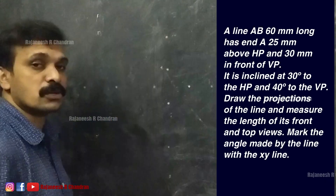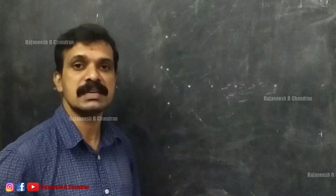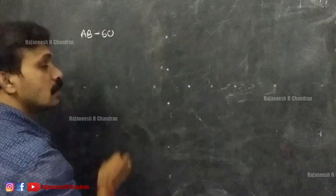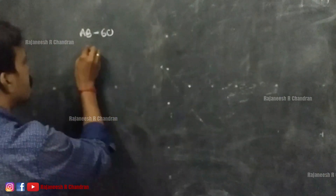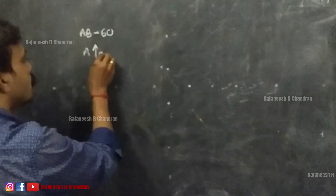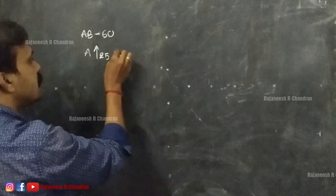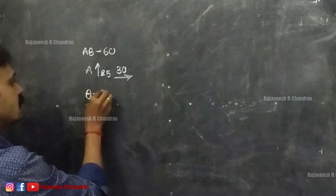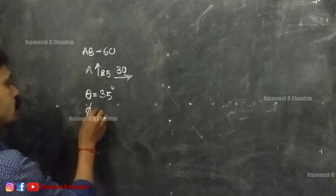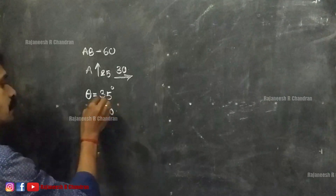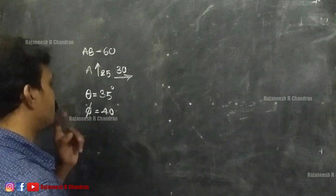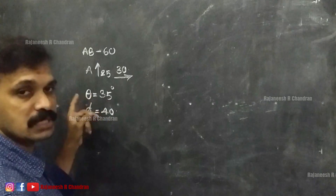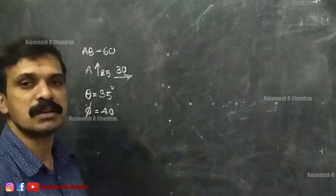So the true length of line AB is equal to 60mm. Point A is 25mm above HP and 30mm in front of VP. The line is inclined at 30 degrees with HP — we know that inclination with HP is indicated by theta — and 40 degrees with VP, indicated by phi. So theta equals 35 degrees and phi equals 40 degrees. These are the given values.